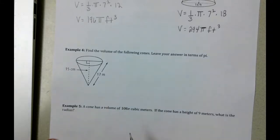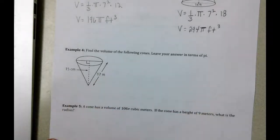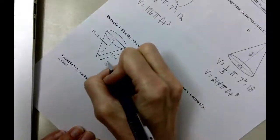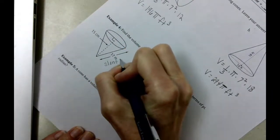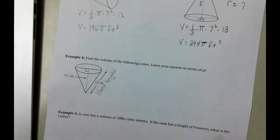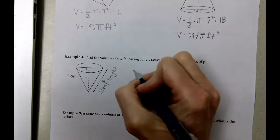Once again on problem number four, what we have is a slant height. You can see it better in this picture than you can on the front page. I'm going to turn this for a minute, but this is the slant height. What that means for us is that we need to figure out the height of our cone.